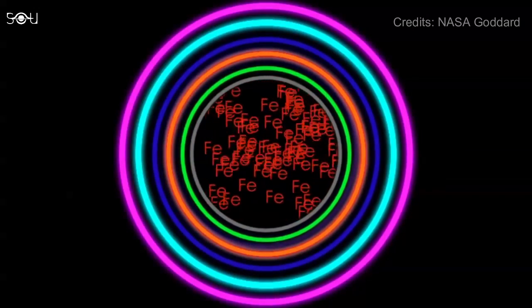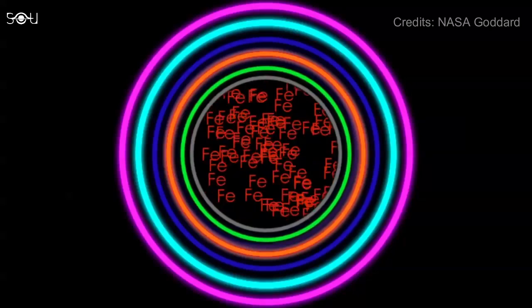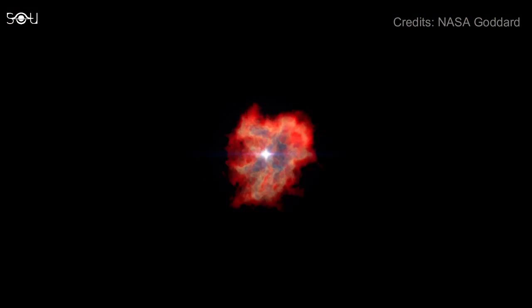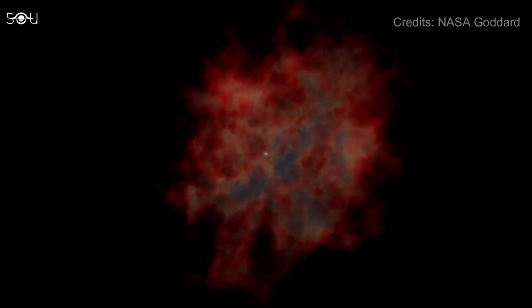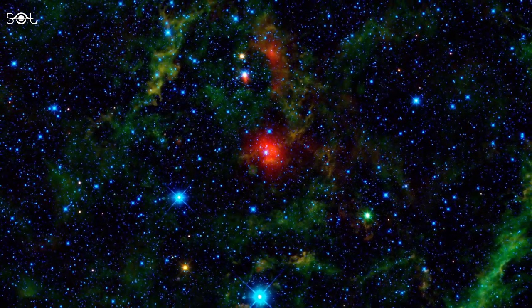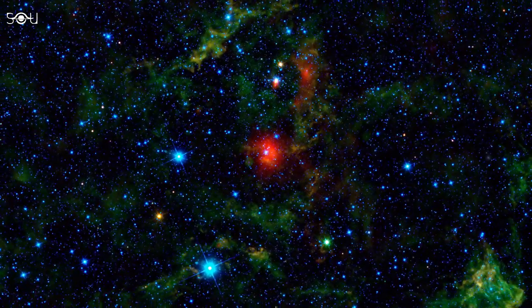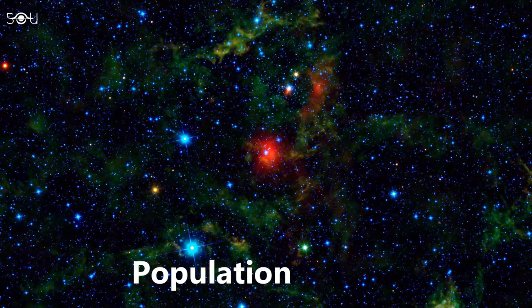When these population 3 stars died, they enriched the interstellar medium with their heavier elements. The new generation stars that subsequently formed contained these heavier elements. They were higher in metallicity than the population 3 stars. The next generation stars were called the population 2 stars.